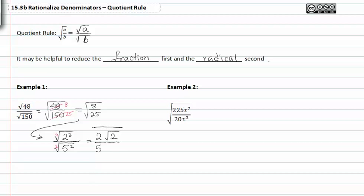So this is the most simplified expression that you can have by starting out with the square root of forty-eight over the square root of one-fifty. Notice that the two and the five do not reduce, so this is as simplified as it can be.